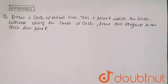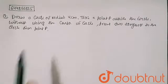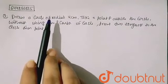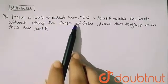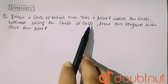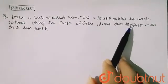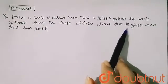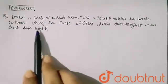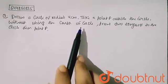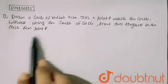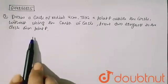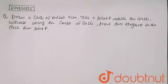Hello friends. In this question it is given that draw a circle of radius 4 cm, take a point P outside the circle, and without using the center of the circle, draw two tangents to the circle from point P.